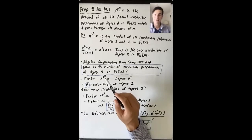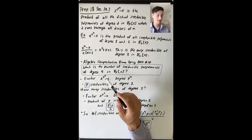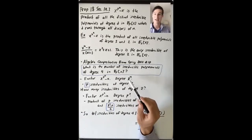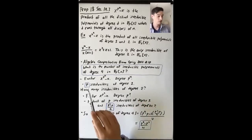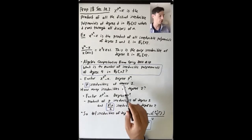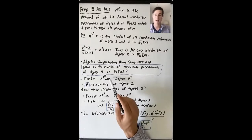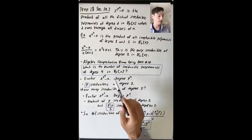Let's count each one of those and keep track of the degree. This product has total degree p to the 4th. A linear irreducible factor looks like x minus alpha for some alpha in F_p, and all such polynomials are irreducible. So there are p irreducible polynomials of degree 1, contributing a factor of degree p.